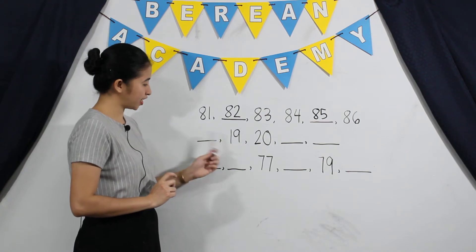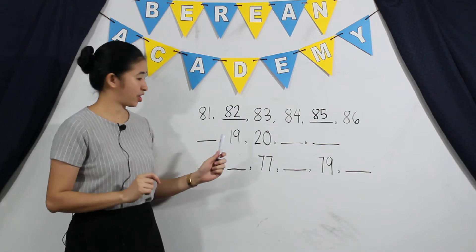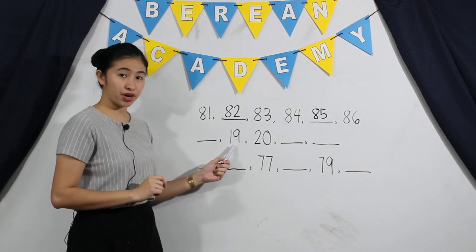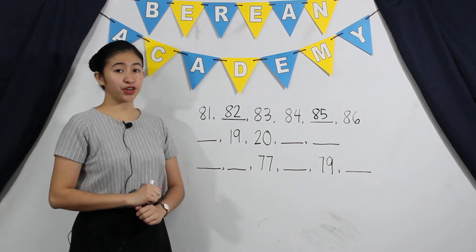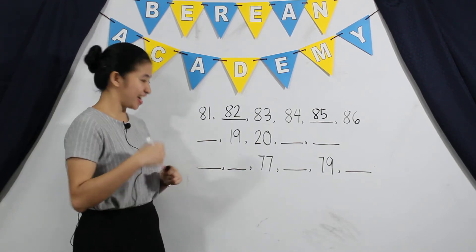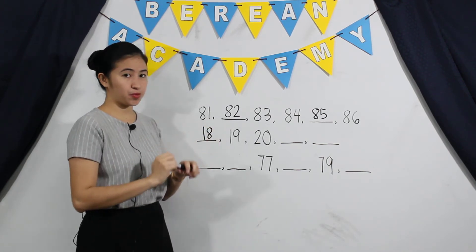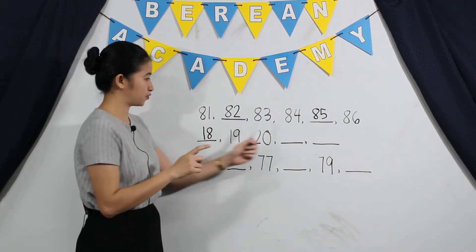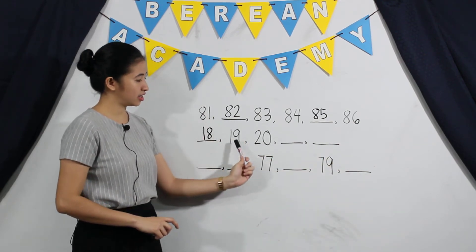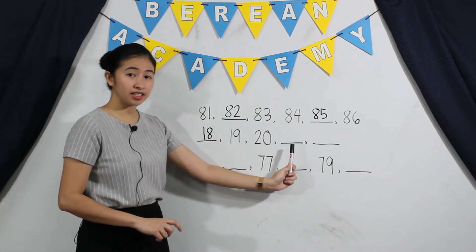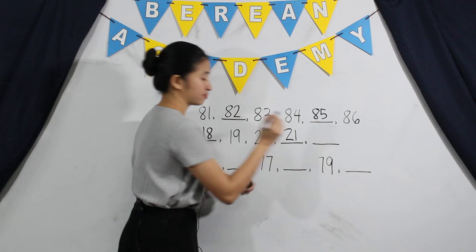And the next. To find out the missing number here, we have to identify the number before 19. So what is the number before 19? It is 18. Correct! So we can just count up to find the missing numbers here. Let's count up: 18, 19, 20, 21, 22.